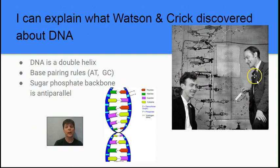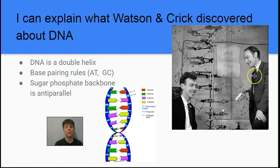Our next learning target is to explain what Watson and Crick discovered about DNA. This is an image of James Watson and Francis Crick with their model of DNA. They discovered that DNA had the famous double helix structure, so it looks like a rope ladder which is being twisted as it comes down. They applied Chargaff's rules to understand that adenine and thymine always pair together, and cytosine and guanine always pair together.